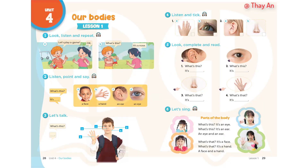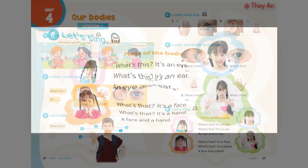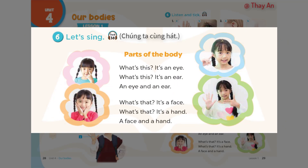Page 29, Lesson 1, Activity 6. Let's sing: Parts of the body. What's this? It's an eye. What's this? It's an ear. An eye and an ear. What's that? It's a face. What's that? It's a hand. A face and a hand.